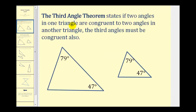Let's first talk about the third angle theorem. This theorem tells us that if two angles in a triangle are congruent to two angles in another triangle, then the third angles must be congruent also. So looking at this diagram, if this angle is congruent to this angle, and this angle here is congruent to this angle here, because they're equal in measure, then these third angles must also be congruent.